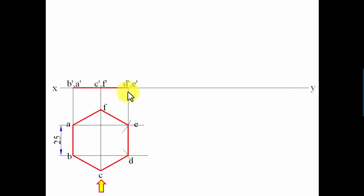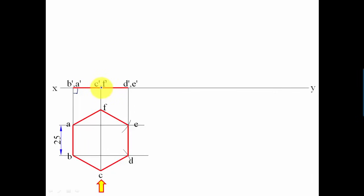Notice that side AB has been kept perpendicular to the XY line, since edge inclination is applied in step three — the edge to be inclined must start perpendicular. In step two we handle surface inclination. Since the surface is inclined to HP, this inclination can only be seen from the front. So in step two we recreate the front view at an angle of 45 degrees, because that is the surface inclination.